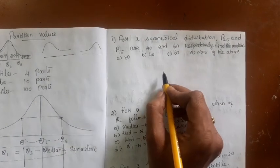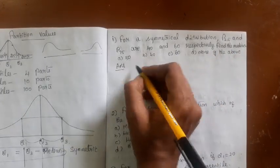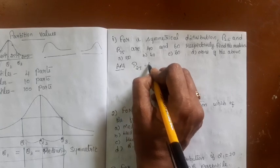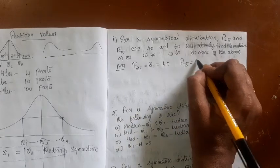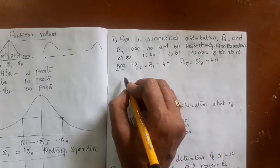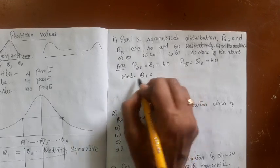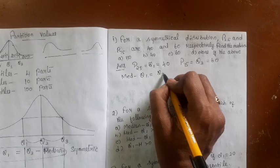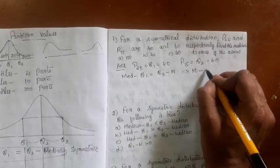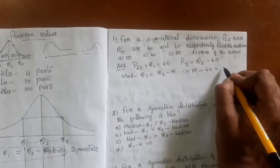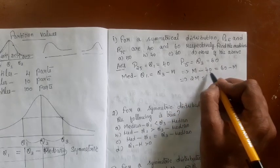Problem: For a symmetric distribution, P25 and P75 are 40 and 60 respectively. P25 is Q1 = 40, and P75 is Q3 = 60. Using the symmetry condition: median minus Q1 equals Q3 minus median. So median minus 40 equals 60 minus median, giving 2·median = 100. Therefore the median is 50. The answer is option A.